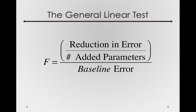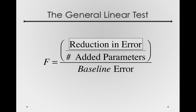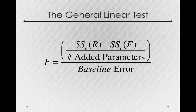Let's tackle each component of the general linear test and see how we can use the different terms we've already seen to form this F statistic. Let's start with the reduction in error. We're comparing the amount of error in the full model and the amount of error in the reduced model. The reduced model holds constant one of the model terms, so it will always have more error. The reduction in error is the sums of squares error from the reduced model minus the sums of squares error for the full model.